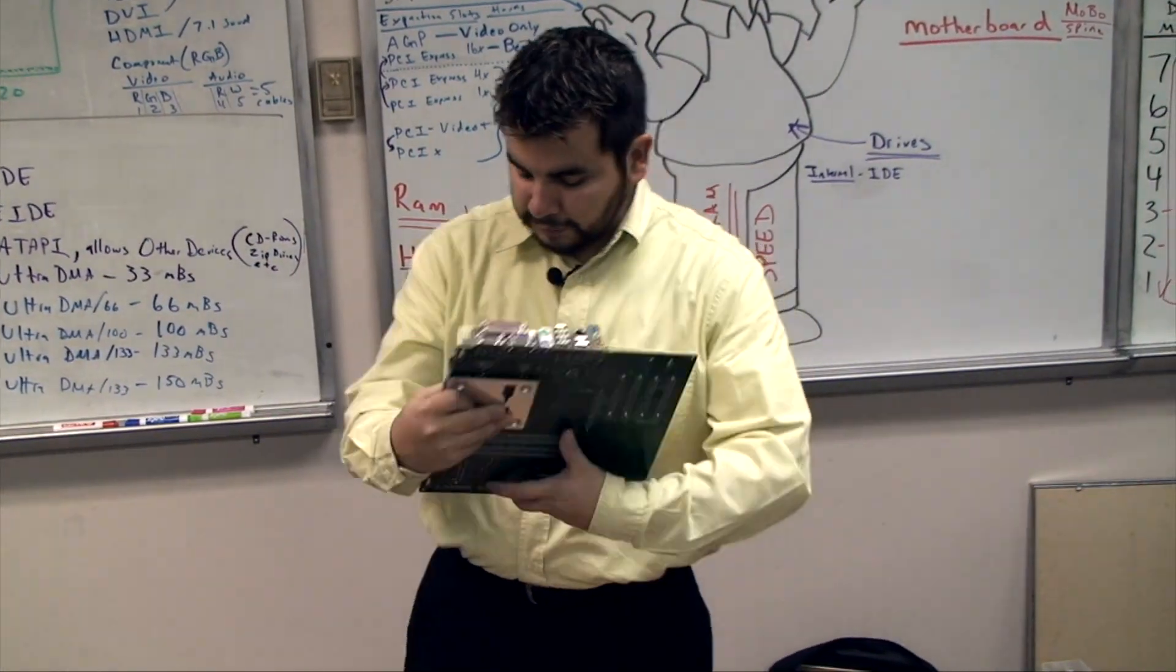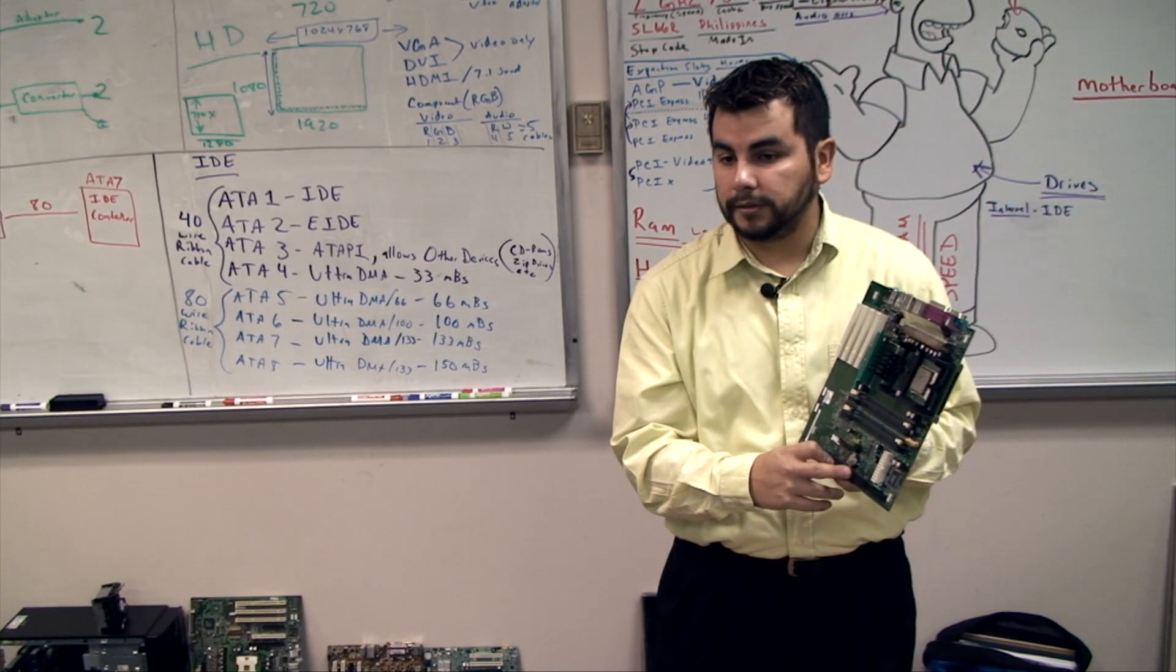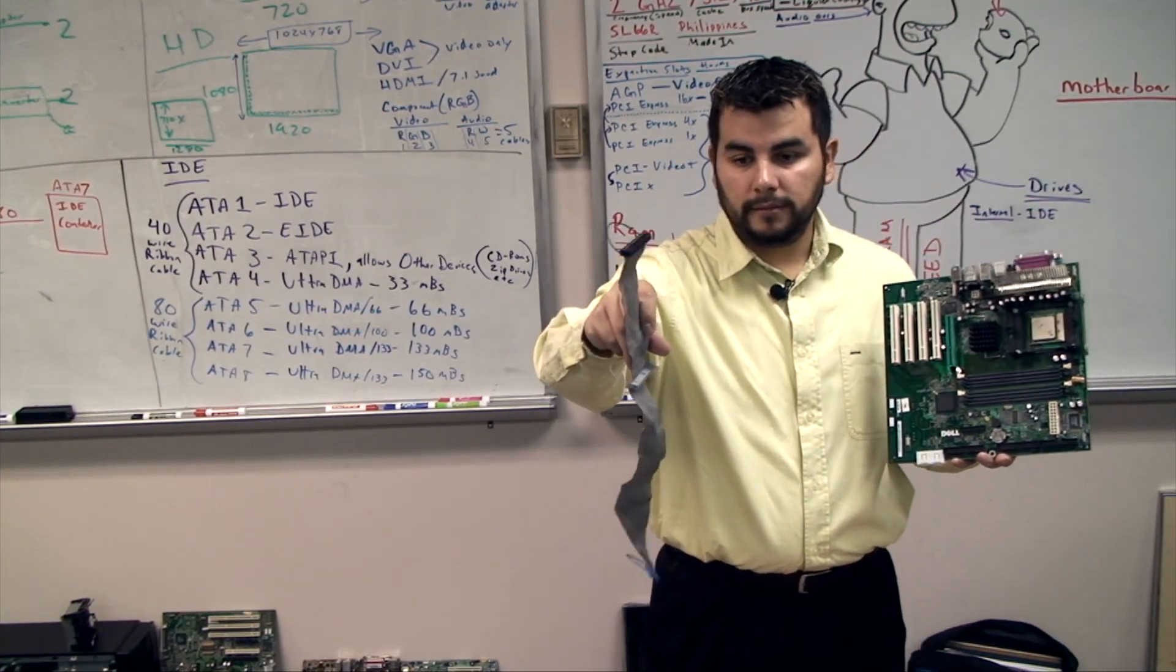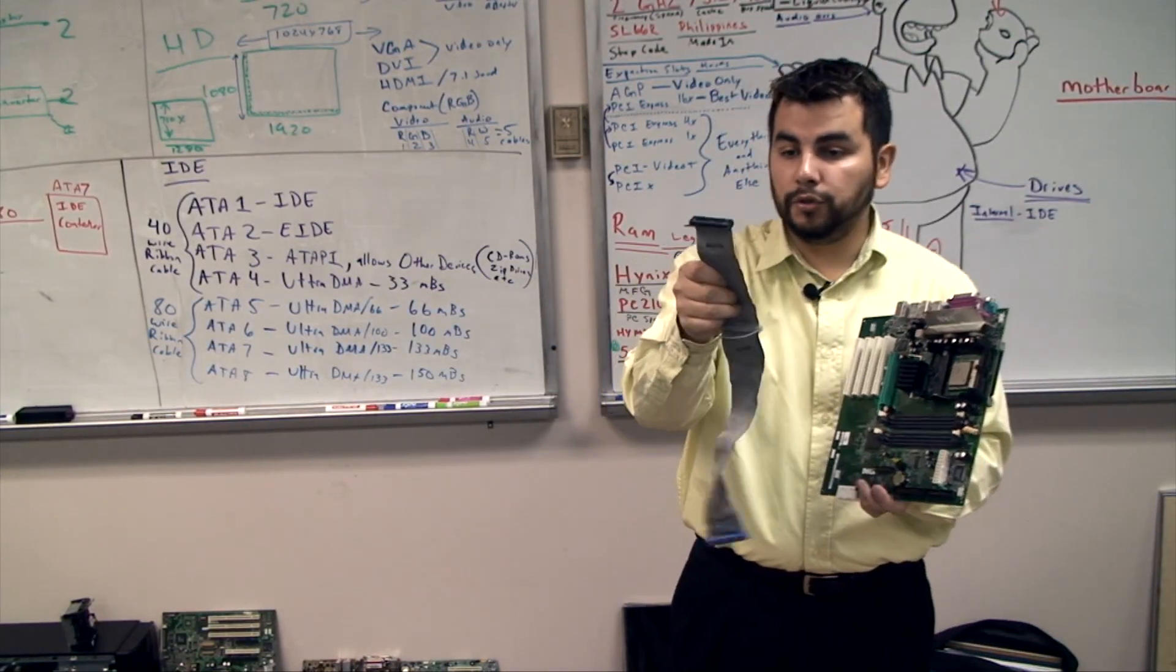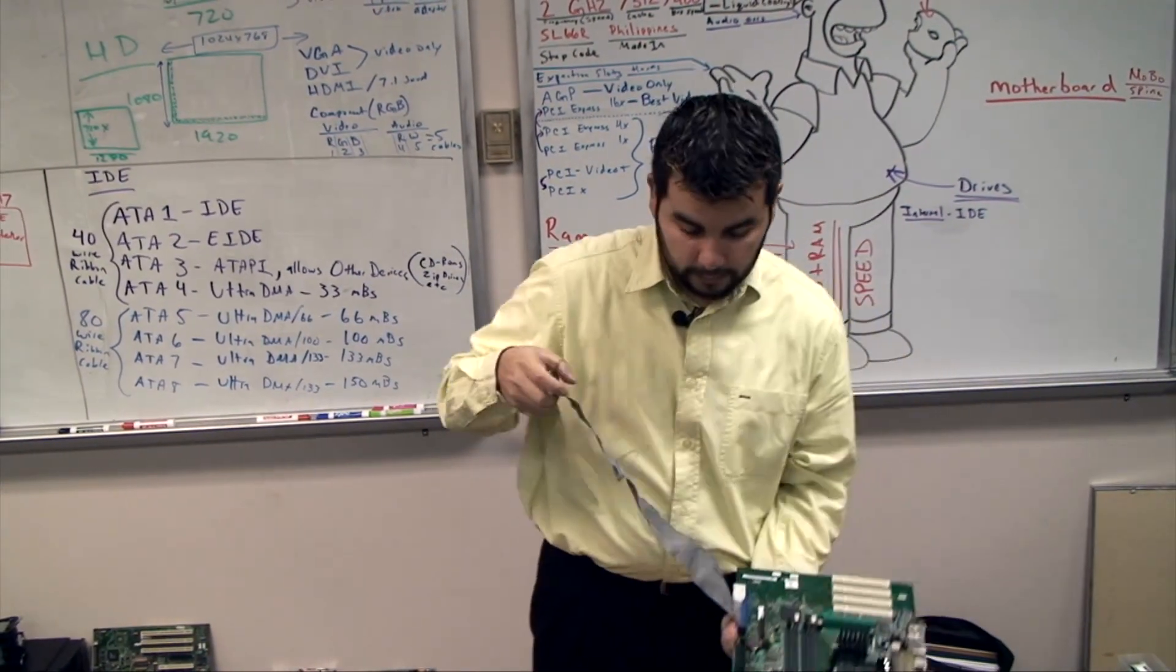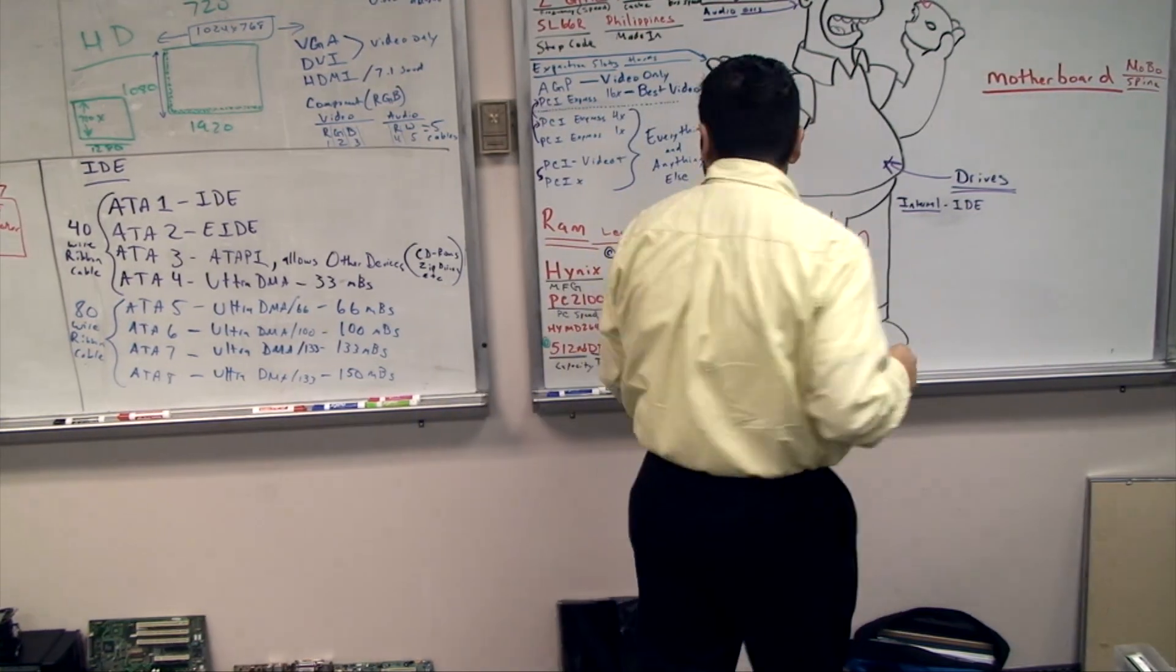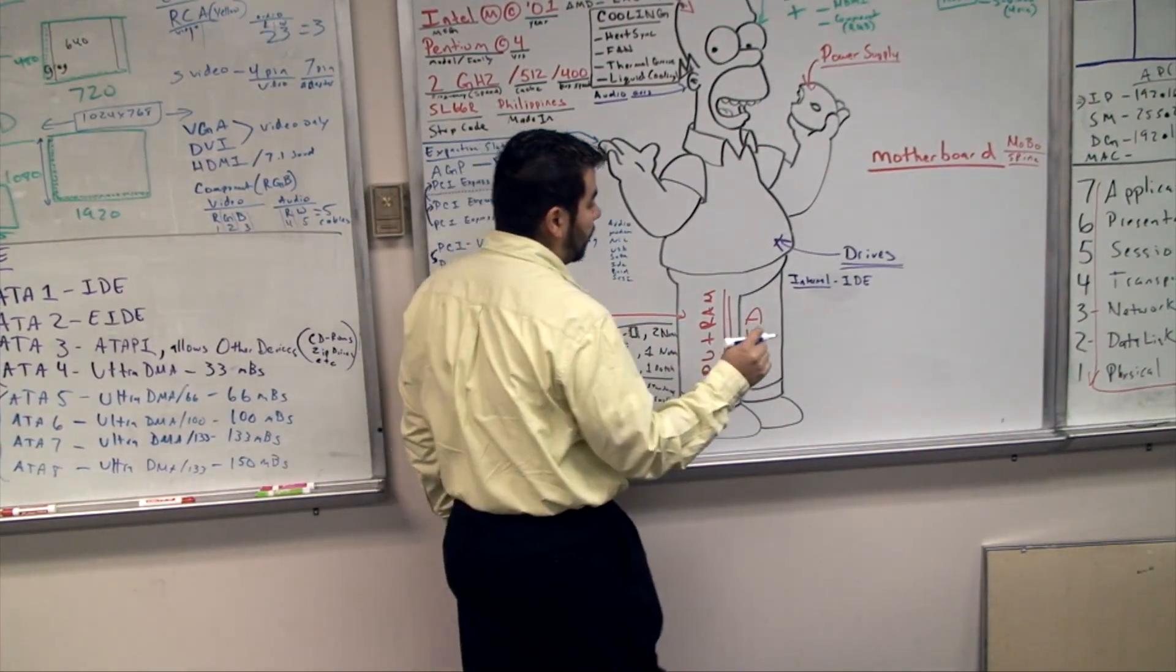Alrighty. So we know we have two connections of IDE. How many total drives can I connect on these connections? Not three because one has to go into the board. So two, right? I can connect two drives on each cable so I can have a total of four. Four drives with two connections. Each cable has two connections and there's two connections. The two connections are called primary and secondary.